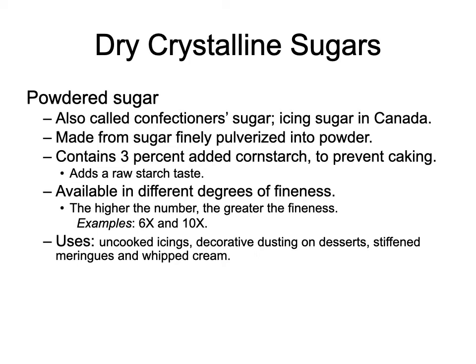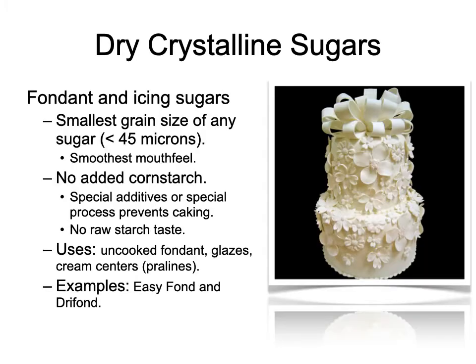Powdered sugar — called confectioner's sugar in the US, icing sugar in Canada and Europe — is made from sugar finely pulverized into a powder. In America, we generally add about three percent cornstarch to absorb moisture, which helps prevent caking and clumping. It's available in three degrees of fineness; generally we have 6x and 10x powdered sugar, with 6x more coarse and 10x more fine. It's used for sprinkling on things, but in some recipes it's called for as an ingredient.